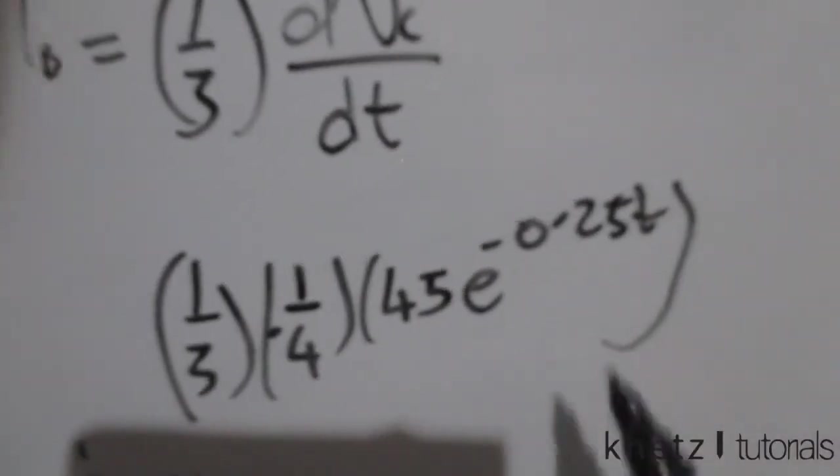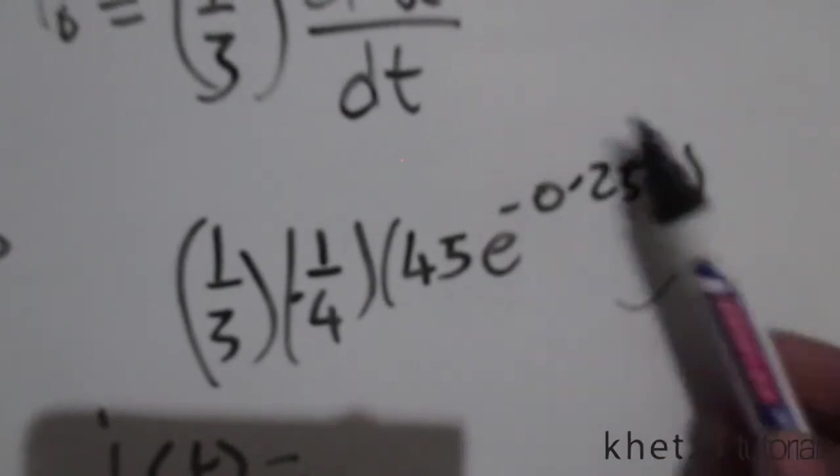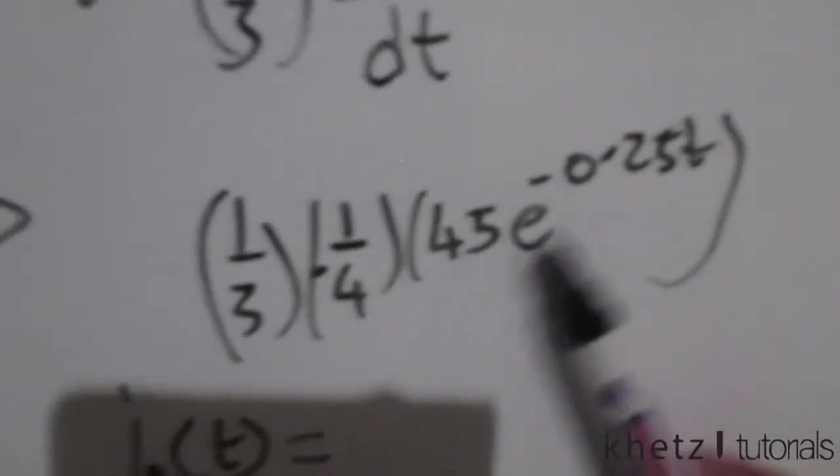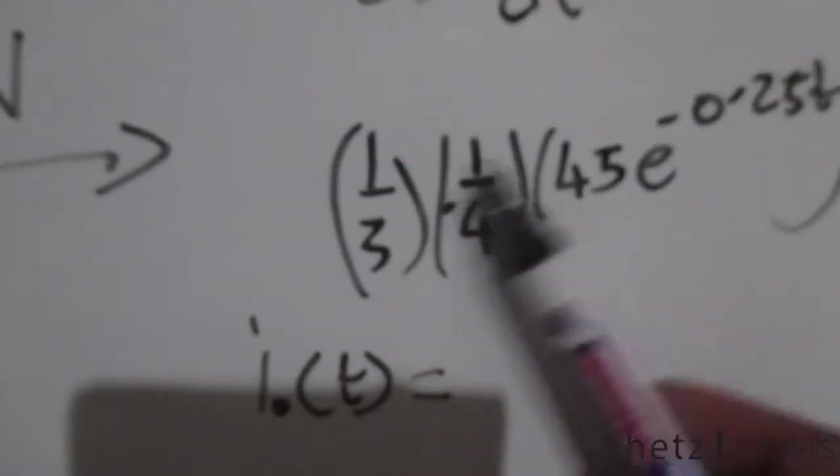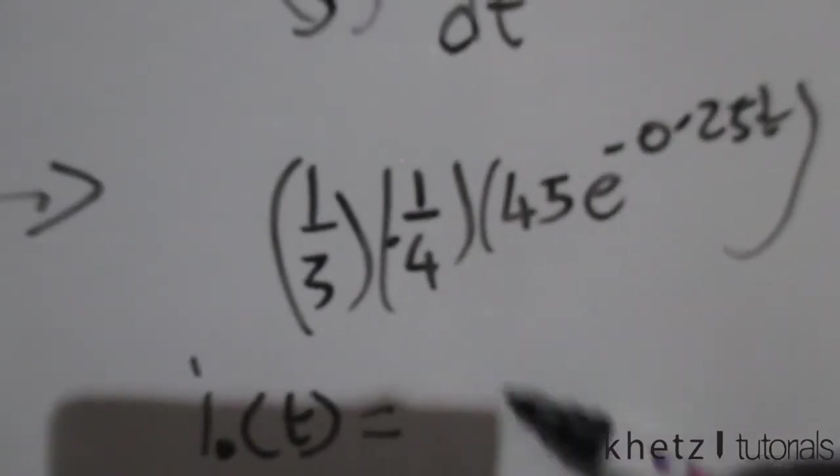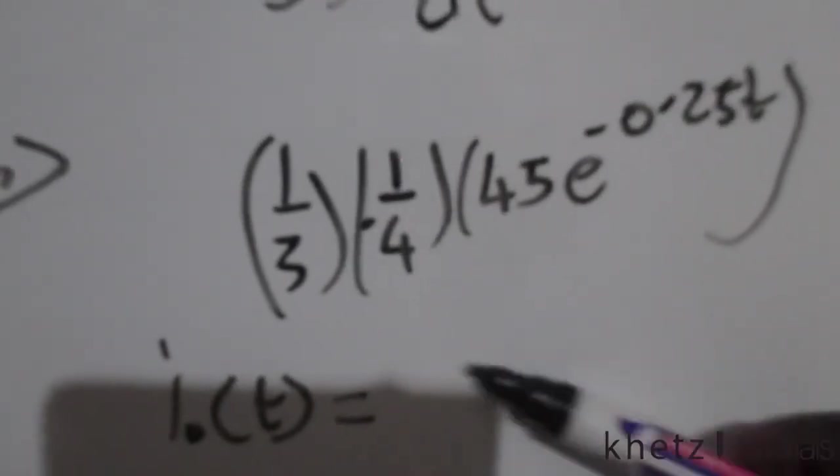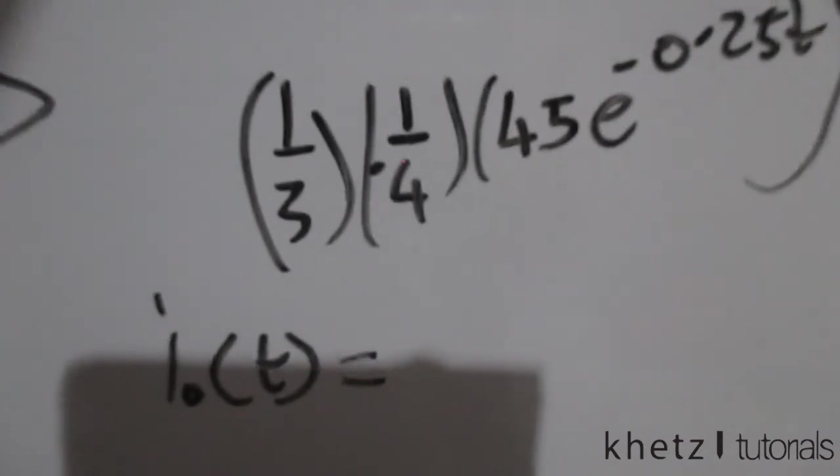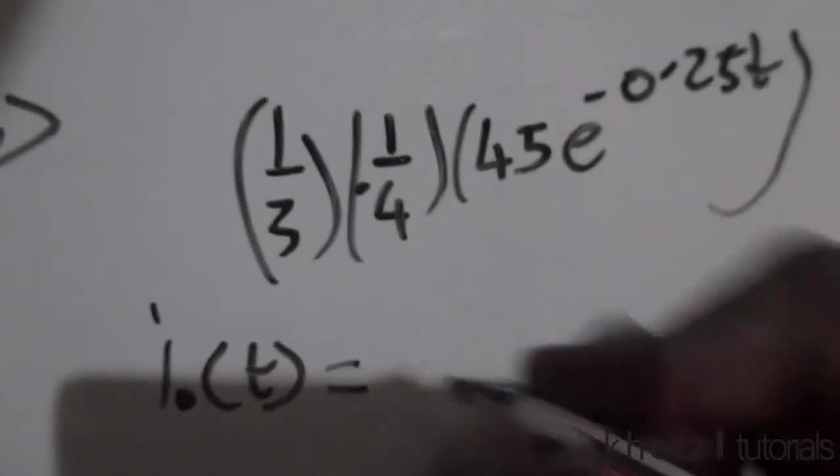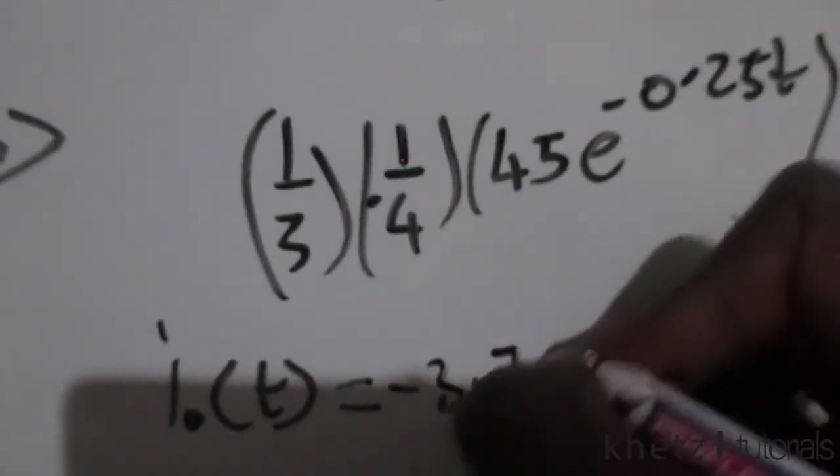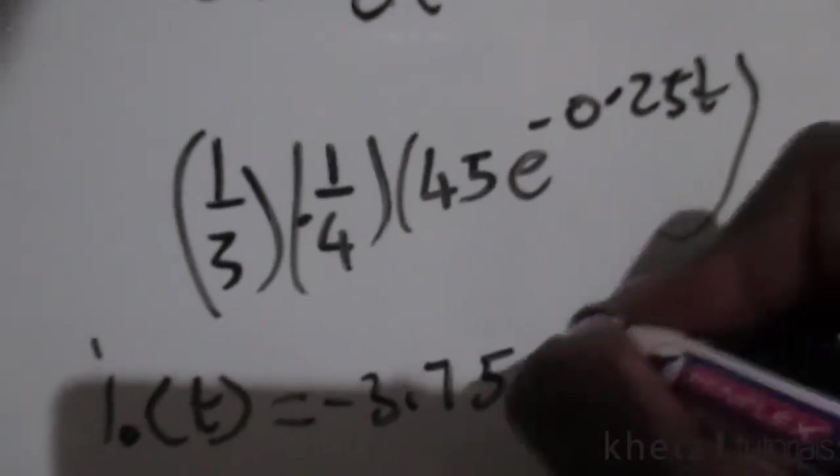When you differentiate your e, you take the coefficient of your variable at the top and multiply it. Here as your coefficient, you're going to have 45 divided by negative 12 which is negative 3.75, and then have everything as it was.